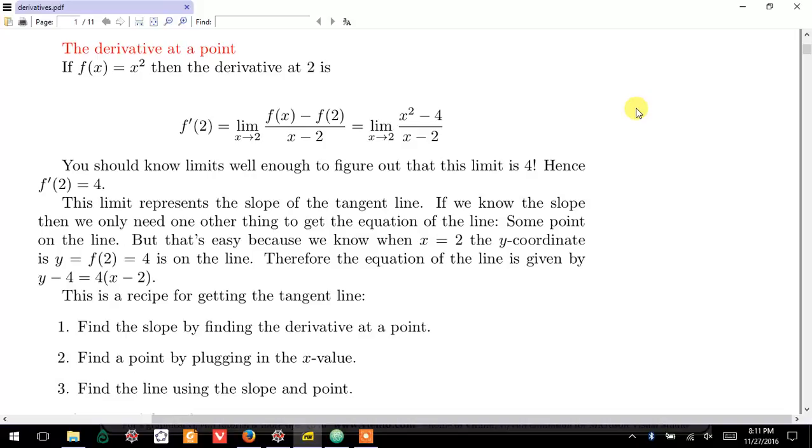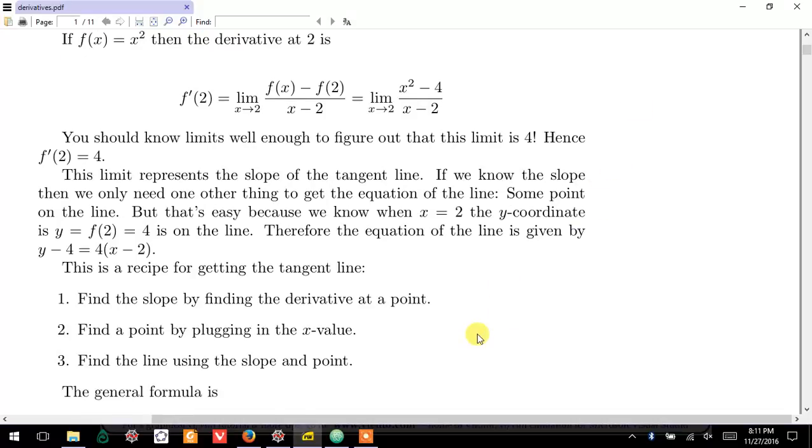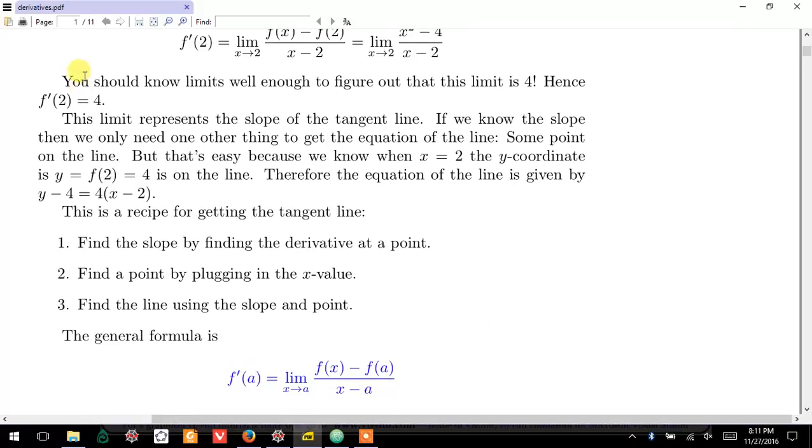It should be obvious how you get this limit. You factor the numerator, you cancel the factor of x - 2, all that's left over is a factor of x + 2, you evaluate that at 2 because now you've canceled the part that was making it discontinuous, and so now you can plug in and so the value will be 4 at the end of the day.